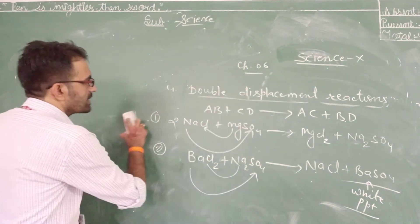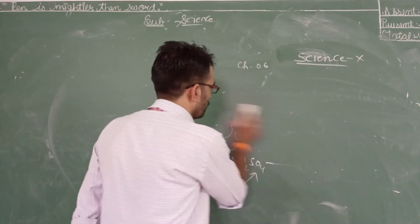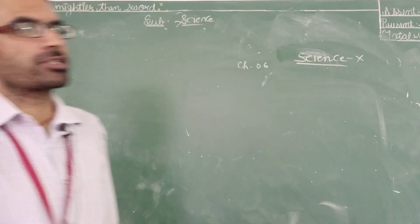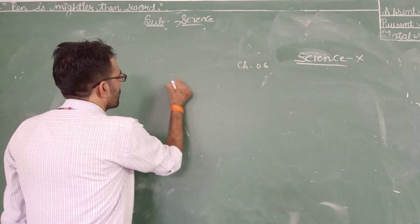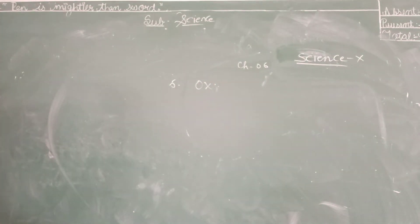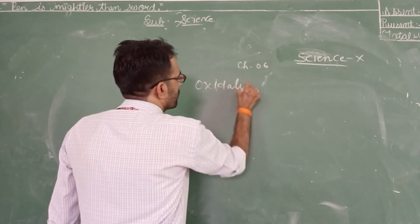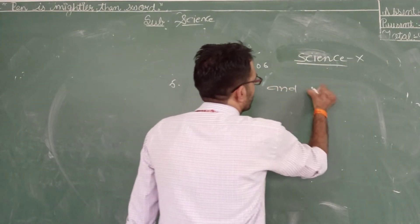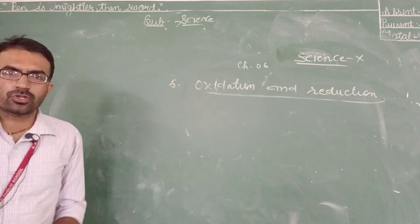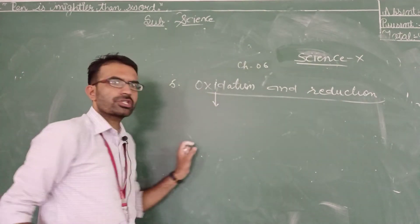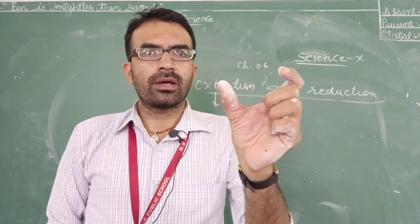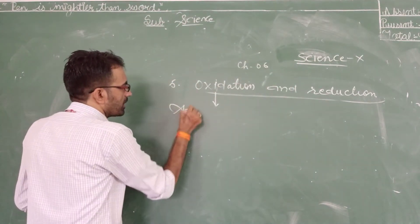Now we will take the next and last type of chemical reactions — the fifth type — which you may know already: oxidation and reduction reactions. First of all, we will discuss oxidation.